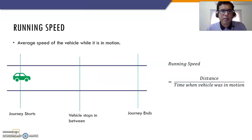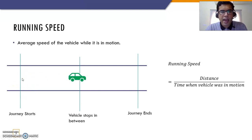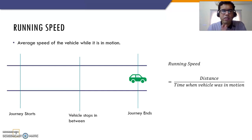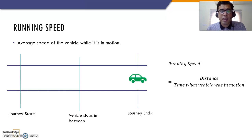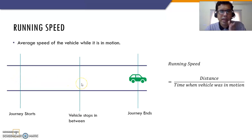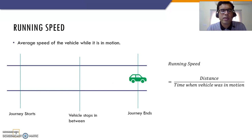Now let's move on to the next concept, which is running speed. A vehicle starts at one point, moves on, and in between it stops — maybe due to congestion or because the driver has some work. Then it resumes its journey and ends at another location. The running speed is the average speed of the vehicle only when it is in motion. We calculate the distance from start to stop point and stop point to end, and divide by the time only when it was in motion — not including the time when it stopped in between. So we use only the running time of the vehicle, hence we call this running speed.